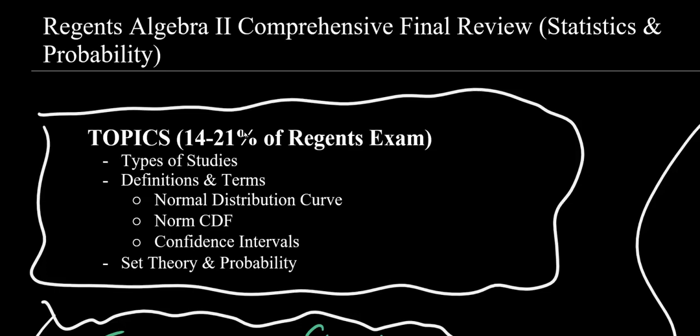We've arrived at the final unit for Algebra 2, Statistics and Probability. This makes up 14-21% of your exam, so usually you'll see one or two multiple-choice and two or three short-answer problems.